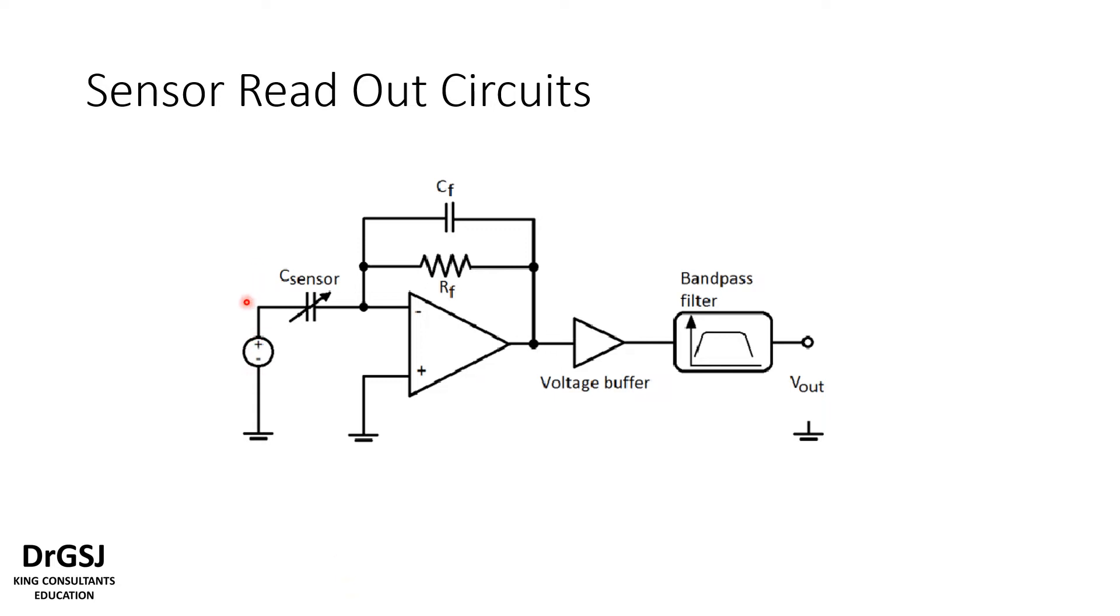Let us learn more about the sensor readout circuit carrying forward from our previous talk. In the previous session we showed that in the inverting amplifier configuration the sensor can be added in the input side and the feedback capacitor can be added here.